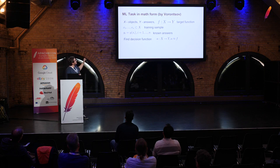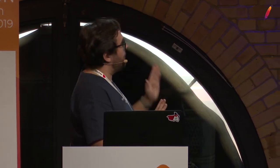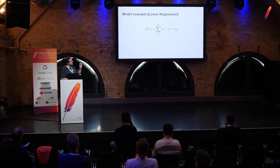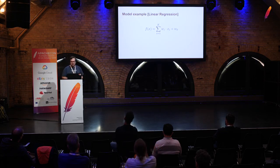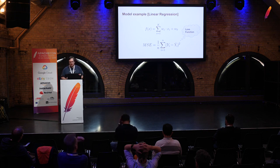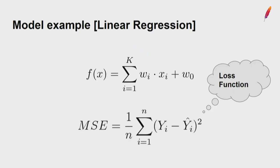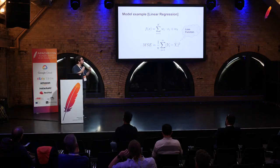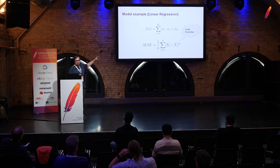The goal is to approximate this unknown function by another function with known hyperparameters. The simplest example is linear regression — describing a linear dependency between input and output. Our goal is to find the best set of w coefficients. The loss function, MSE, helps us: it's the sum of squared deviations between predictions and true answers on a labeled dataset. We try to minimize the MSE result to find the best function.